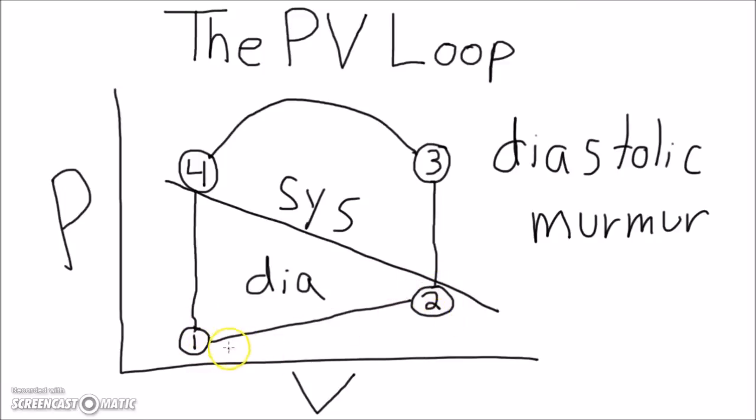From one to two, we can see volume is increasing in the ventricle. That means blood has to be coming in from somewhere, probably the left atrium, and when the blood leaves the left atrium, it passes through the mitral valve.